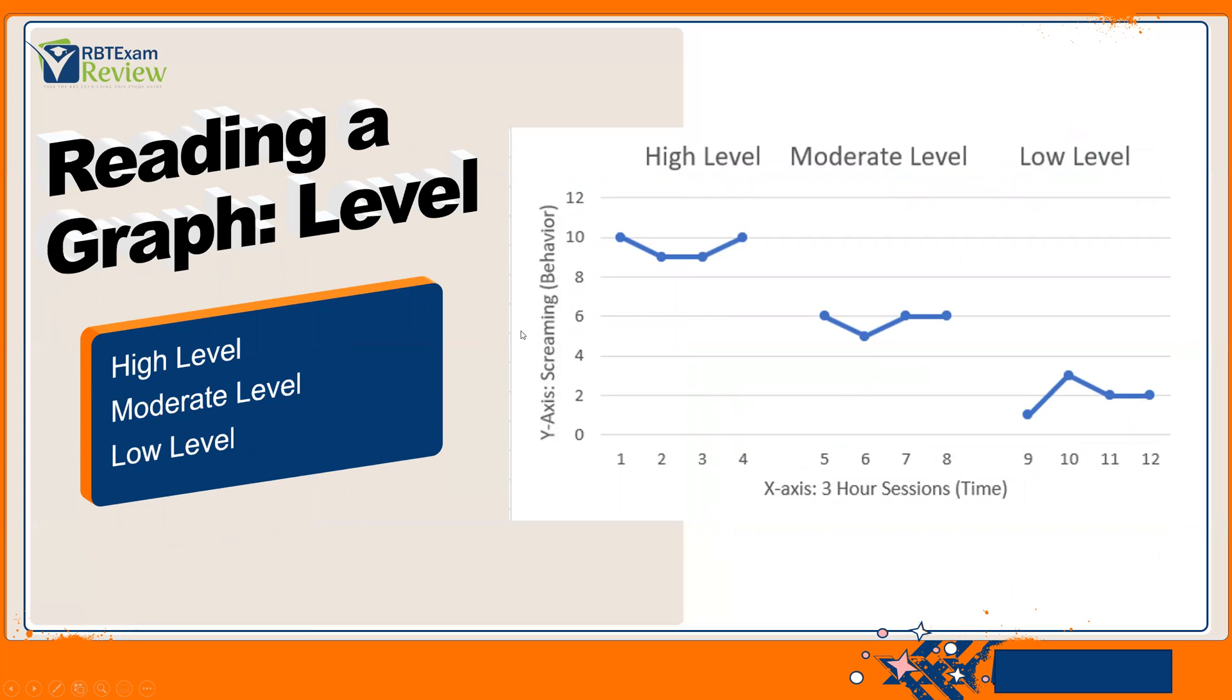Okay, reading a graph again, level. What is level? Level is our third component we're going to look at. And typically, we're going to use level when we're looking at two different phases. So, if we're going from a baseline to an intervention, what is our change in level? Level is simply what is the data in relation to the y-axis. So, in this instance, our high level sits around nine to ten instances of streaming per session. So, in this graph, this is a high level. The frequency or the rate, whatever you're measuring, is high.